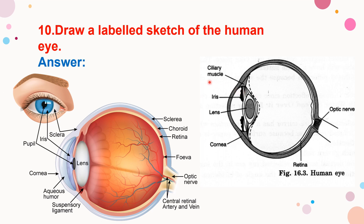We are taking ciliary muscles. These ciliary muscles adjust the focal length of the eye lens — this is known as accommodation. The cornea is a transparent membrane. The iris enables various aperture sizes to see the images. Images fall on the retina and the optic nerve carries signals to the brain. This is the complete pictorial representation of the human eye.